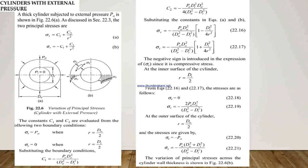Now we see cylinders with external pressure. In cylinders with external pressure, as shown in figure 22.6, the internal pressure pi equals zero since we consider external pressure only. Po is the external pressure acting on the cylinder, do is the outer diameter, and di is the inner diameter of the cylinder.